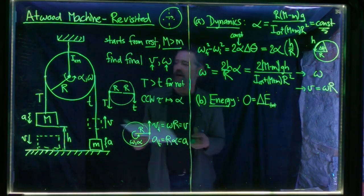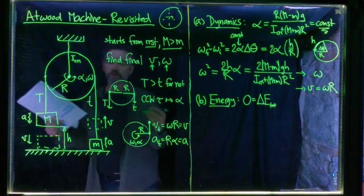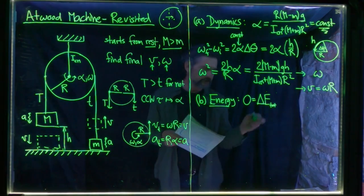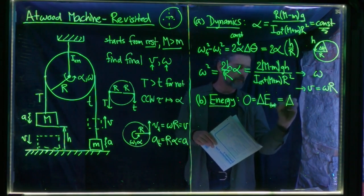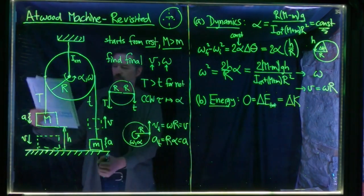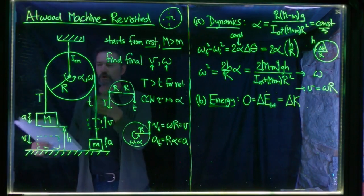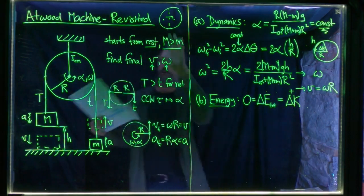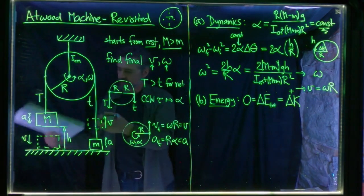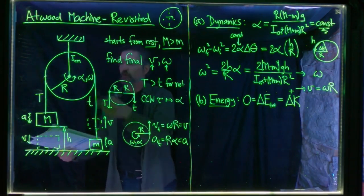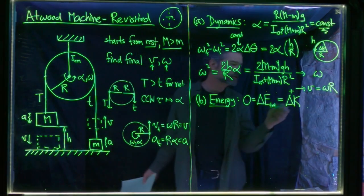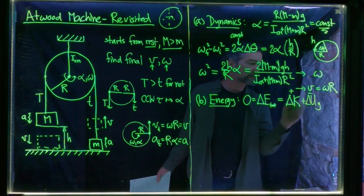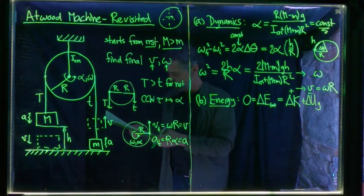We have this isolated system — the whole thing including the gravitational field — and the total energy doesn't change. The total energy includes kinetic energy stored in masses in linear motion and masses in rotational motion. Everything starts at rest, so there's zero kinetic energy initially. Just before big M hits the ground, all three objects have kinetic energy — that's a positive change. There must also be a negative change in gravitational field energy, and the sum is zero.